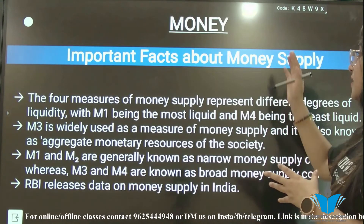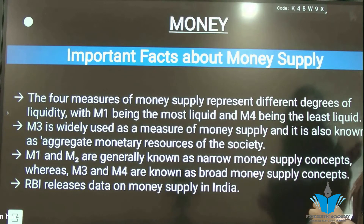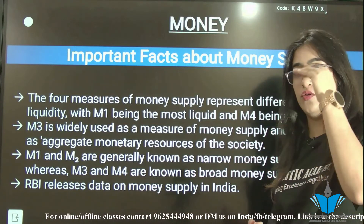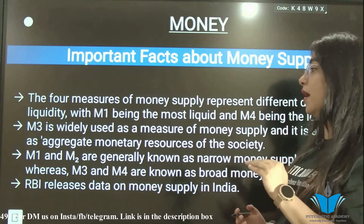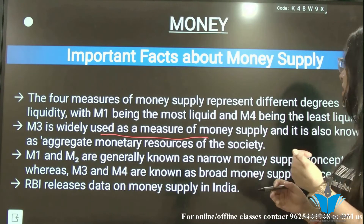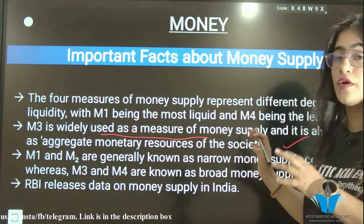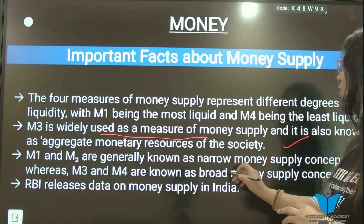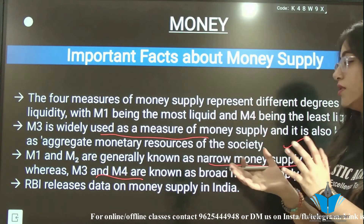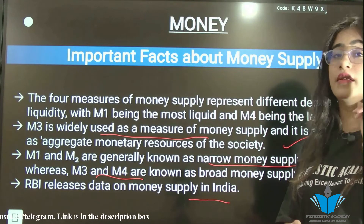Here are four important facts about money supply. First, M1 is the most liquid and M4 is the least liquid — in order: M1, M2, M3, M4. Second, M3 is the most widely used measure, also known as the aggregate monetary resource of the society. Third, M1 and M2 are narrow money supply concepts, while M3 and M4 are wider concepts. Fourth, RBI releases money supply data in India.